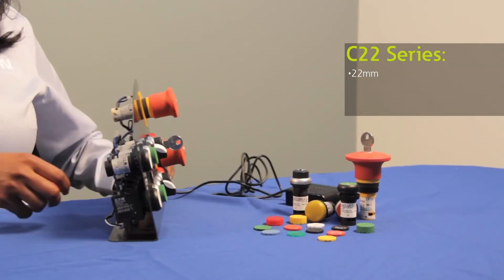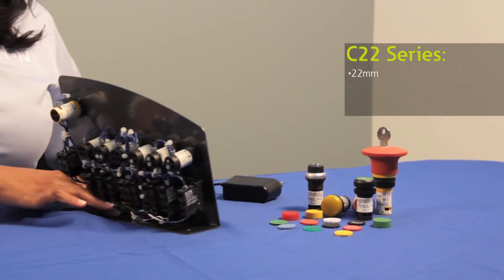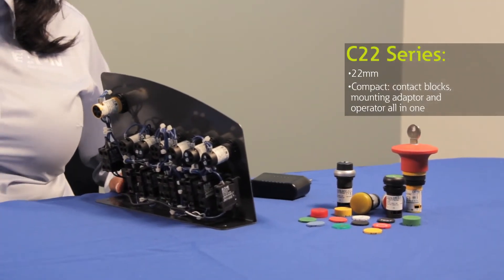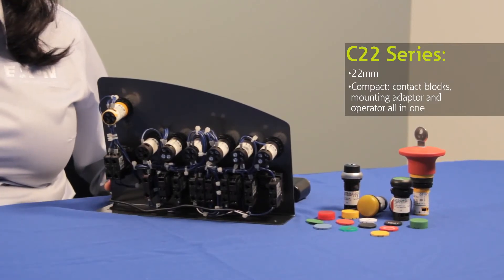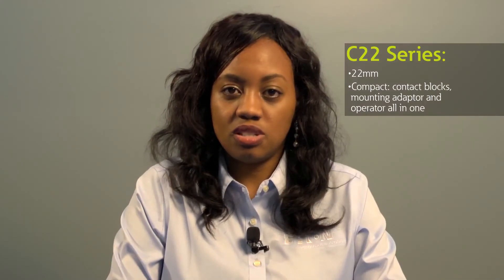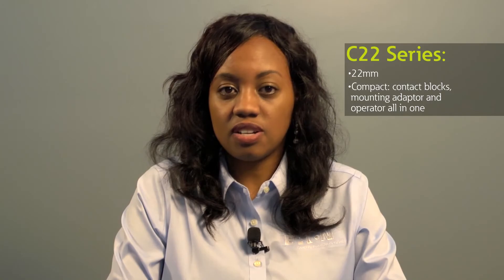However, from the back of a panel you'll notice that the C22 push buttons are compact and that's because our contact blocks, mounting adapter and operator are integrated into one simple device. This approach reduces inventory while enhancing functionality.